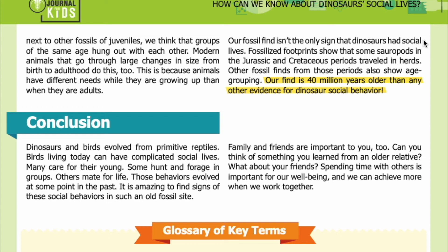Our fossil find isn't the only sign that dinosaurs had social lives. Fossilized footprints show that some sauropods in the Jurassic and Cretaceous periods traveled in herds. Other fossil finds from those periods also show age grouping. Our find is 40 million years older than any other evidence for dinosaur social behavior. Conclusion: Dinosaurs and birds evolved from primitive reptiles. Birds living today can have complicated social lives — many care for their young, some hunt and forage in groups, others mate for life. Those behaviors evolved at some point in the past, and it is amazing to find signs of these social behaviors in such an old fossil site.